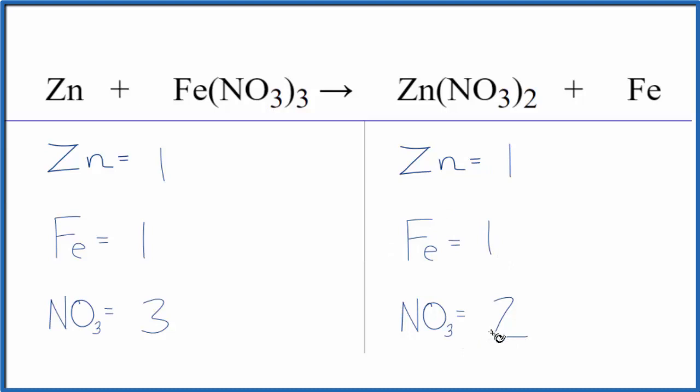It looks like what I'm going to have to do is get this nitrate here to be an even number. So if I put a two in front of the iron three nitrate, I have the three nitrates times two. That'll give me six nitrates. So now I have an even number. One times the two. Now I have two iron atoms.